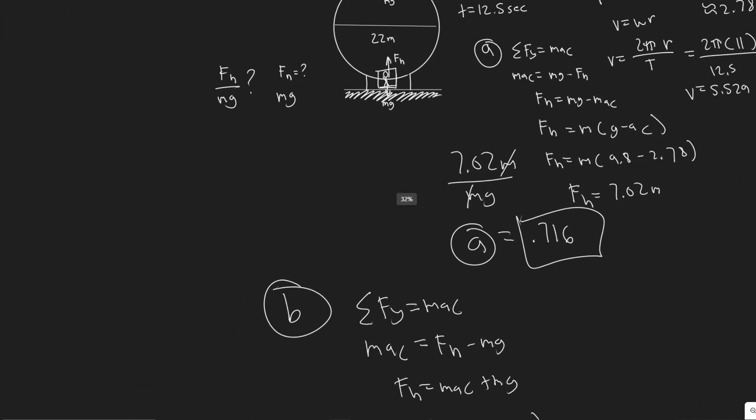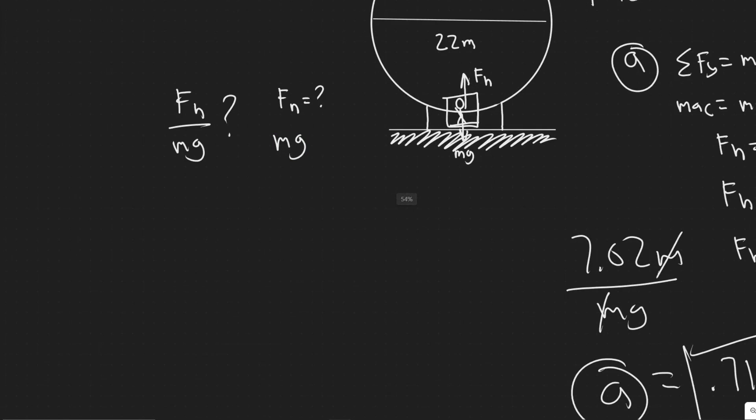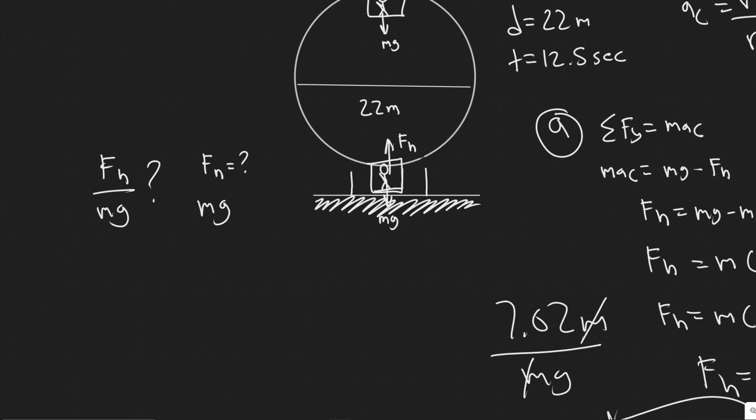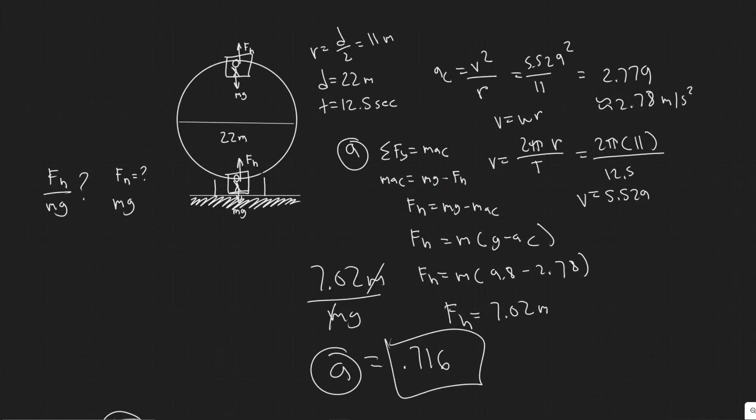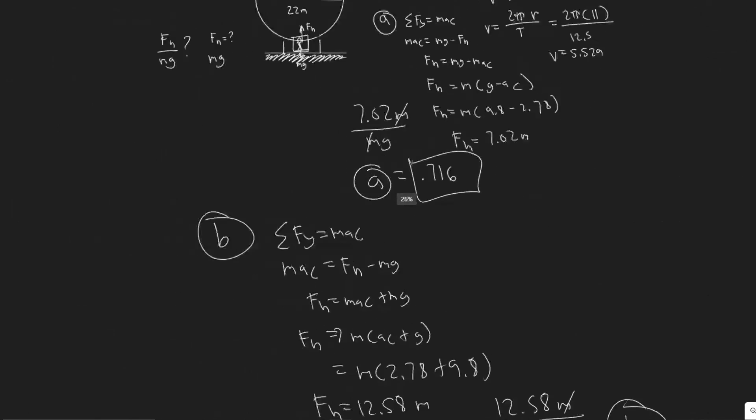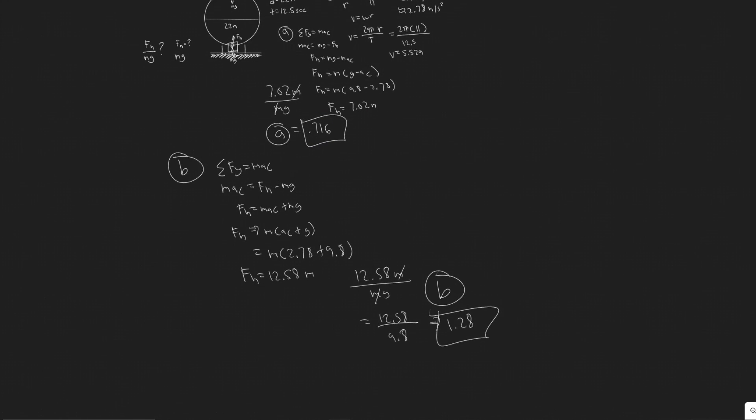But yeah, so mainly the main takeaway from this problem is that you need to know that normal force is basically what they mean by apparent weight, because if you didn't know that, you're not gonna be able to solve the problem. And then basically just summing the forces and solving for centripetal acceleration. But yeah, so these are your two answers. And hopefully you found this video useful.